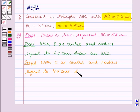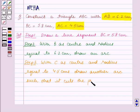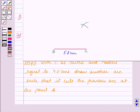We will draw another arc such that it cuts the previous arc at the point A. With C as center and radius equal to 4.5 cm we have drawn this arc and it cuts the previous arc at this point A.